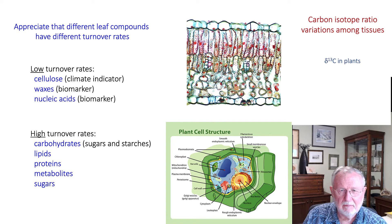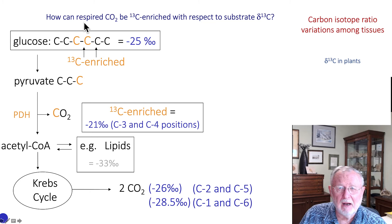So how can we see a variation in the respired CO2? How can it be enriched at some times and depleted at other times? Let's consider the molecule of glucose. In this six-carbon molecule, the two carbons in the middle are 13C enriched. The basis for that has to do with the carboxylation. When you break that glucose down to pyruvate, and pyruvate dehydrogenase releases that CO2, that CO2 is enriched.